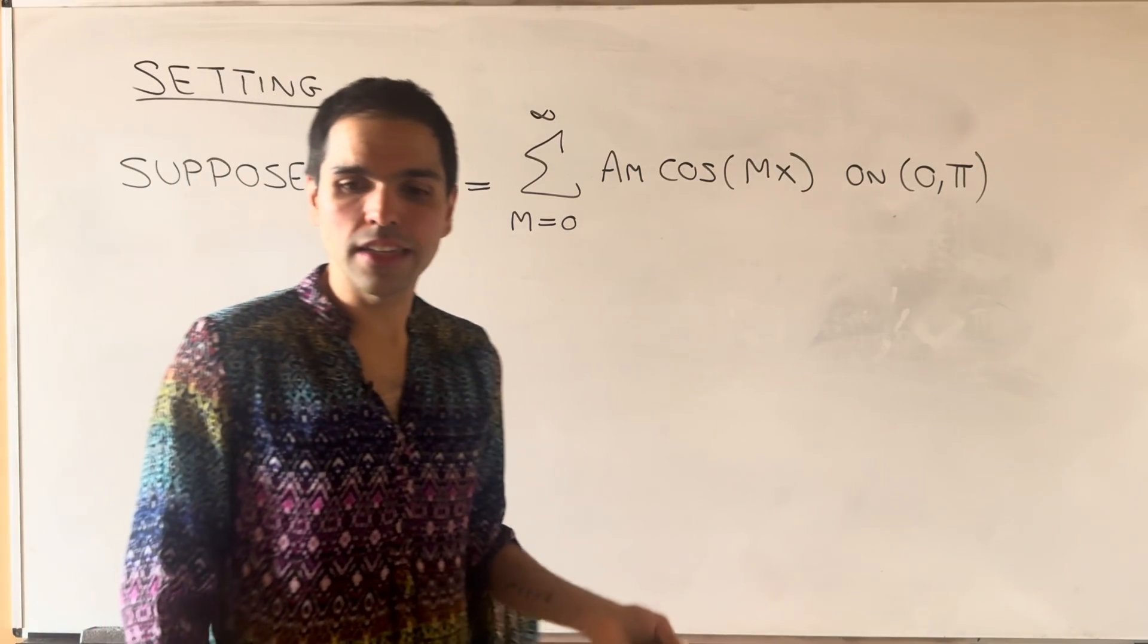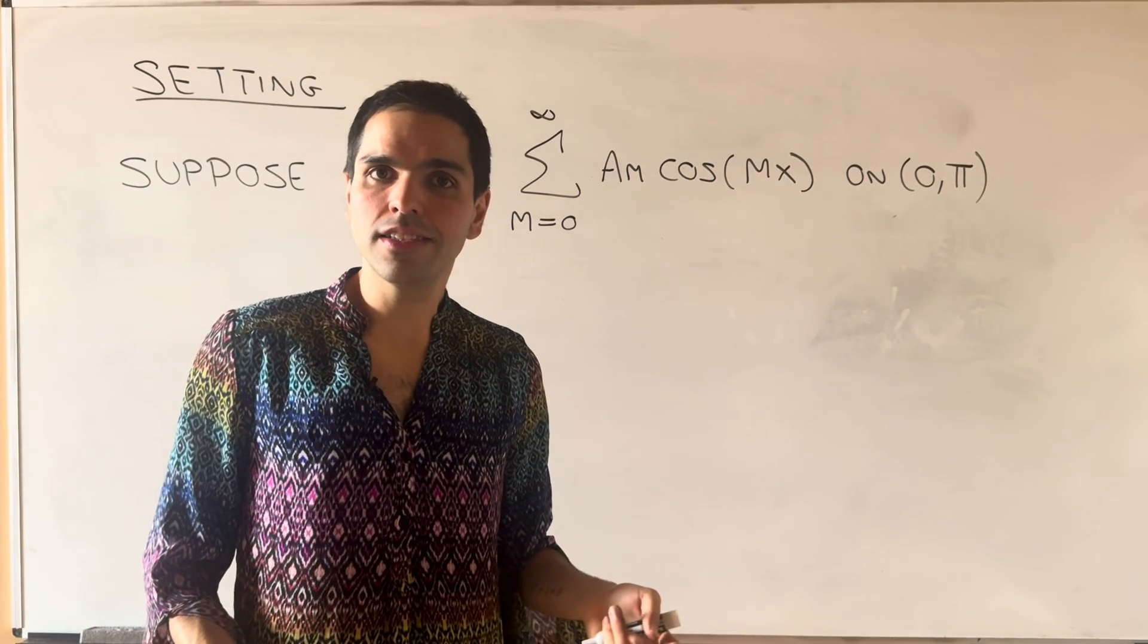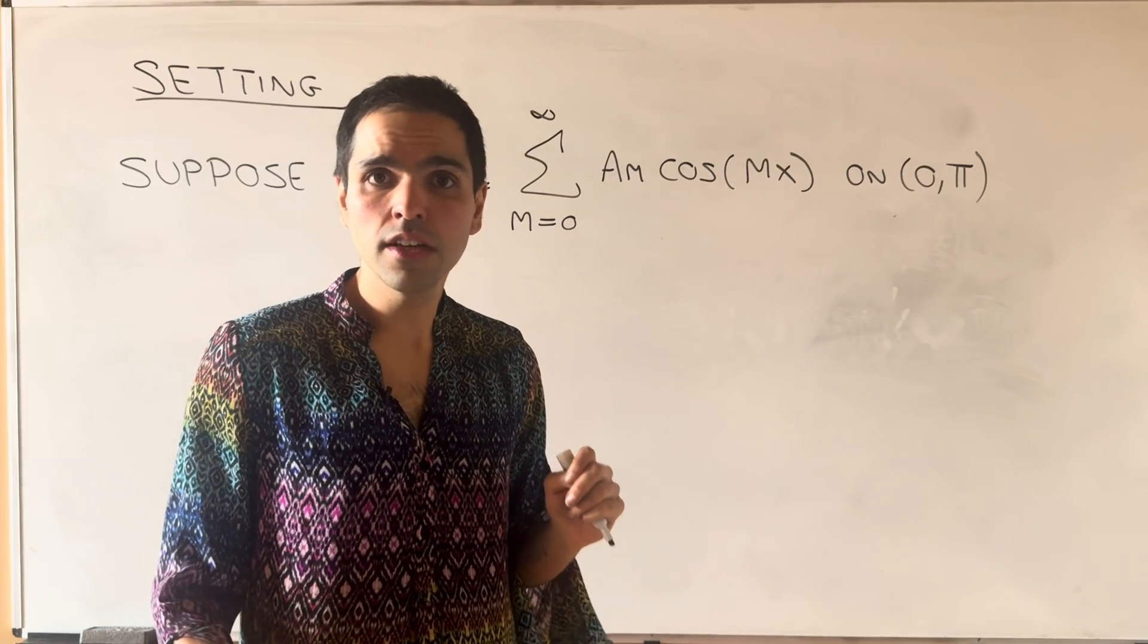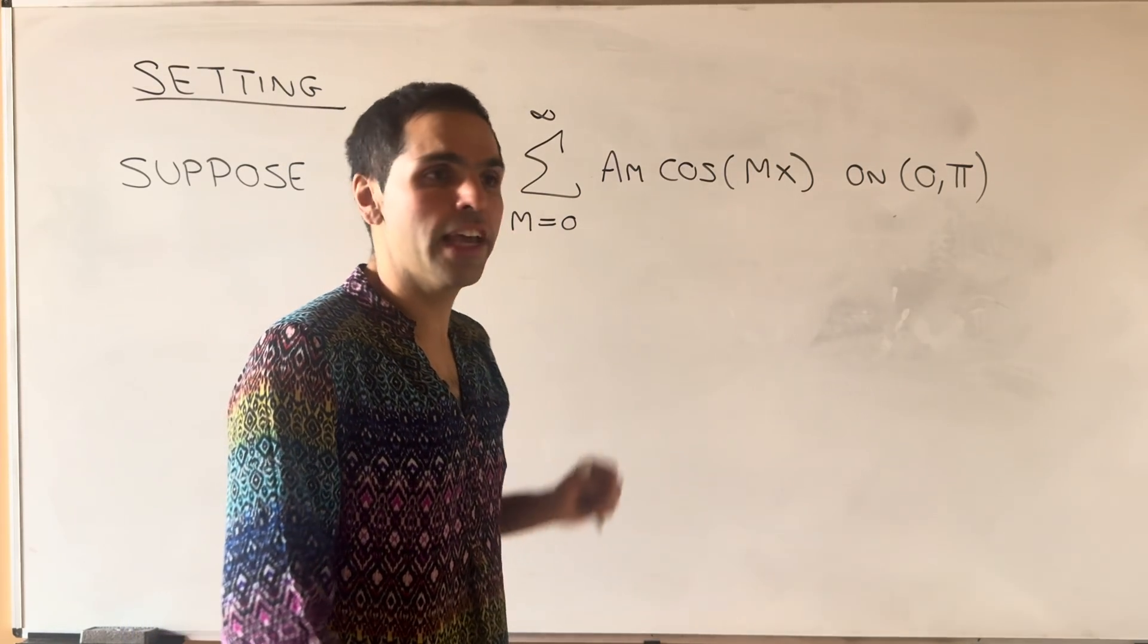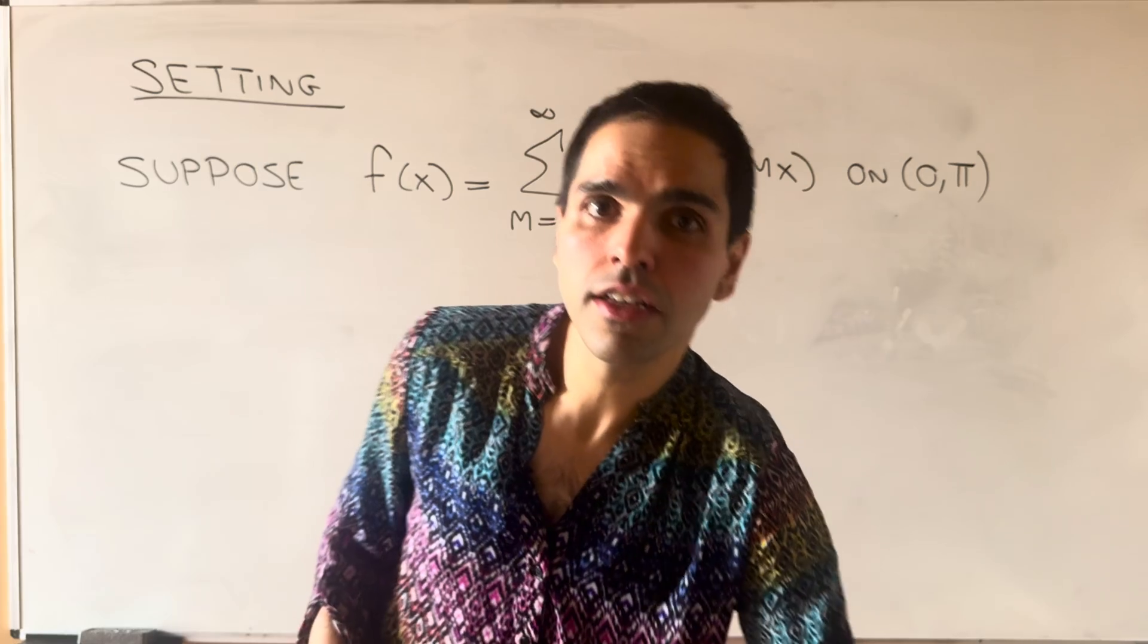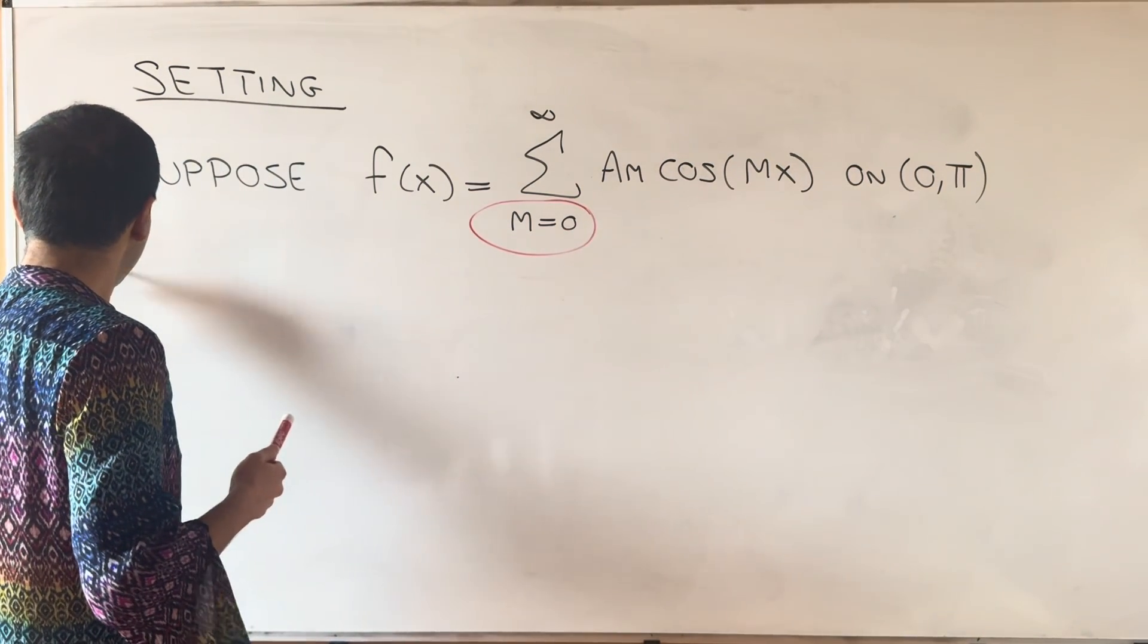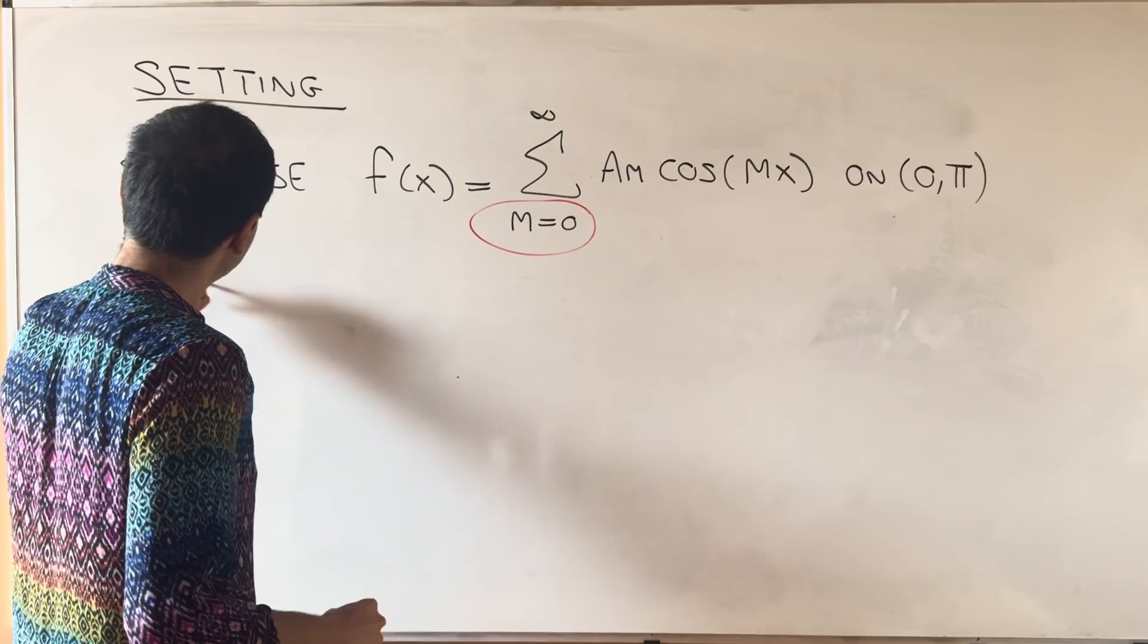Now, the good news is, everything we learned about the sine series also applies for the cosine series, but we just have to be careful of the special case, which is m equals 0. So just beware, there is a special case.